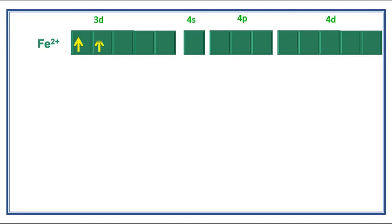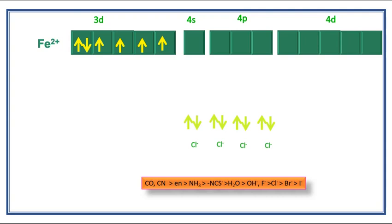Next we have to check the characteristic of the ligands. Here the ligands are 4 chloride ligands. These 4 chloride ligands are weak-field ligands. It cannot pair up the electrons in 3d orbitals.